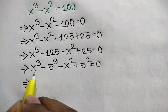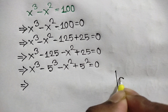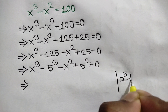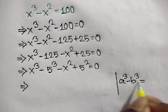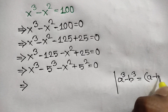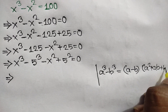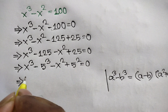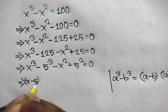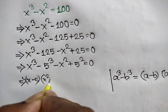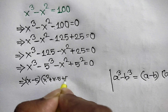For the first two terms we apply the difference of cubes formula: a cube minus b cube equals a minus b times a square plus ab plus b square, where a equals x and b equals 5. Applying this formula we write x minus 5 times x square plus x times 5 plus 5 square.